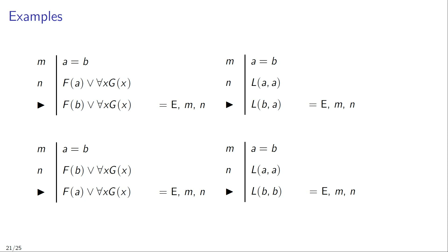Now this works symmetrically. Suppose that in line M we have the sentence A equals B, and in line N we have the sentence FB or all X are G. You can then infer that either FA or all X are G, and justify this inference by means of identity elimination applied to lines M and N.